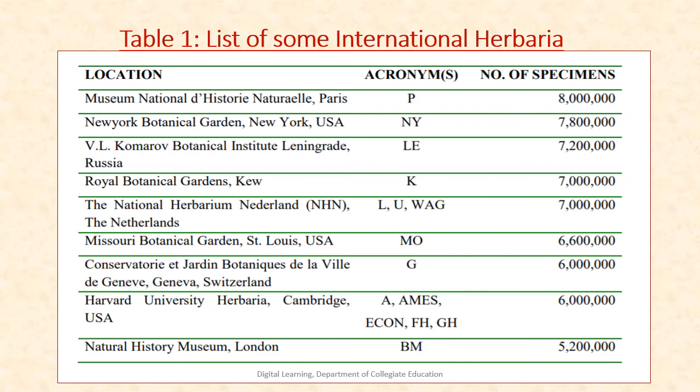Table 1 gives information on a list of some international herbaria, including location, acronyms used, and number of specimens deposited. Herbaria listed include: National Herbarium Paris, New York Botanical Garden, Komarov Institute Leningrad, Royal Botanical Garden Kew, National Herbarium Netherlands, Missouri Botanical Garden, Boissier Botanical Garden Geneva, Harvard University Herbaria, and Natural History Museum London.